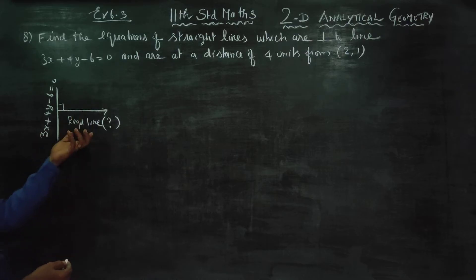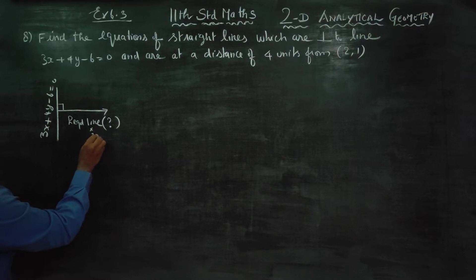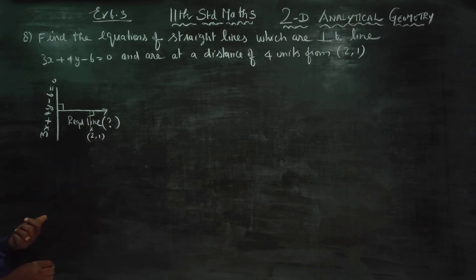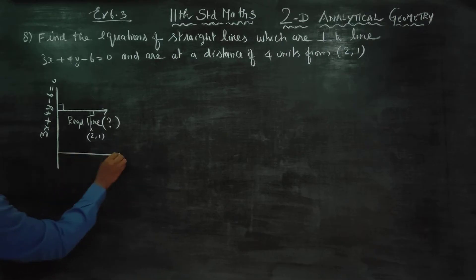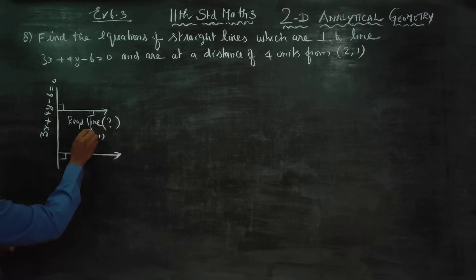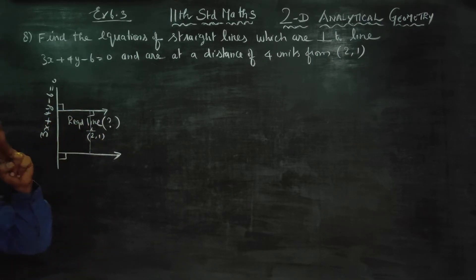The point (2,1) is given, and the distance is 4 units. For example, at point (2,1), if you measure 4 units to one perpendicular line and 4 units to another, there will be 2 such lines — both perpendicular to the given line at a distance of 4 units from (2,1).